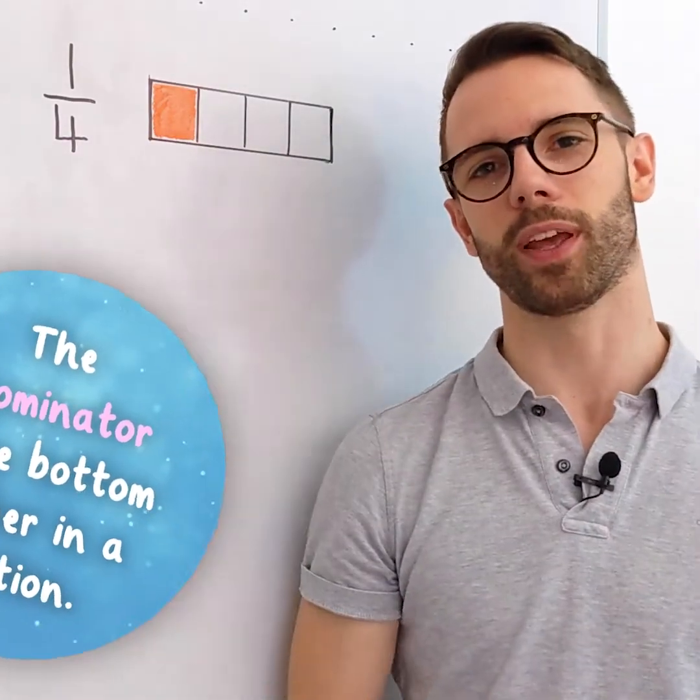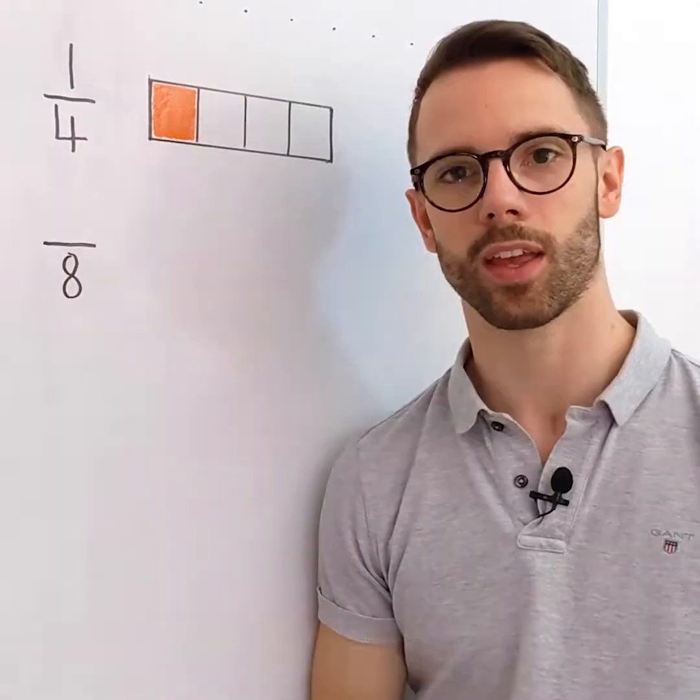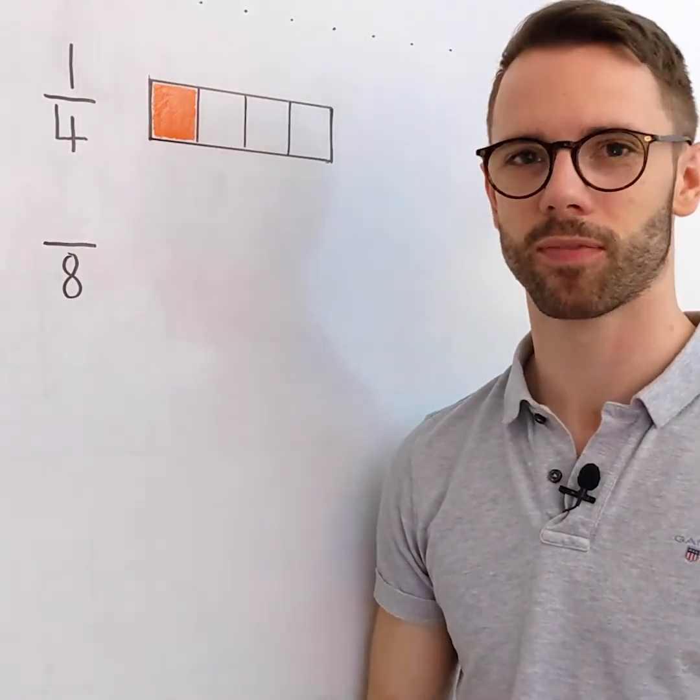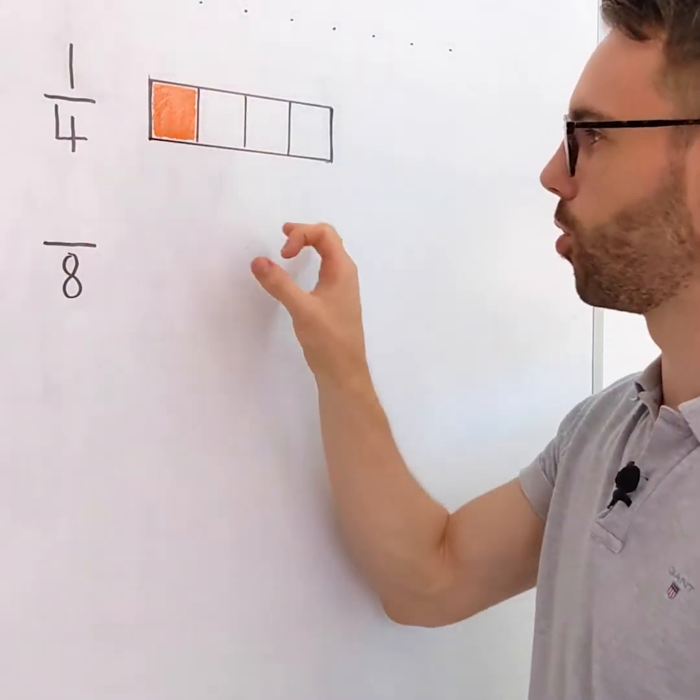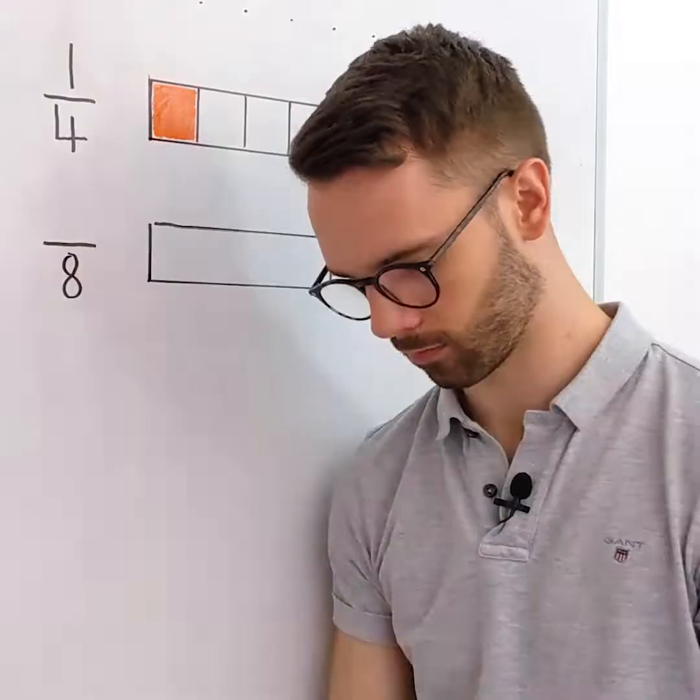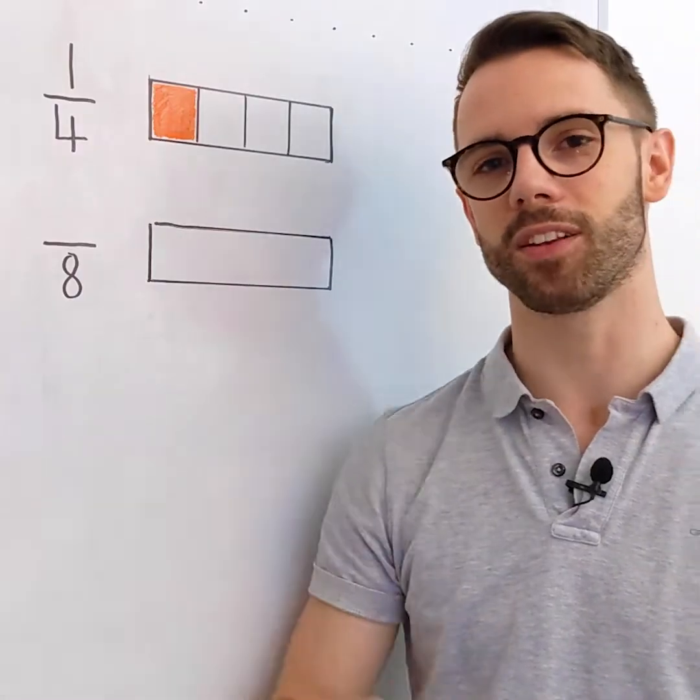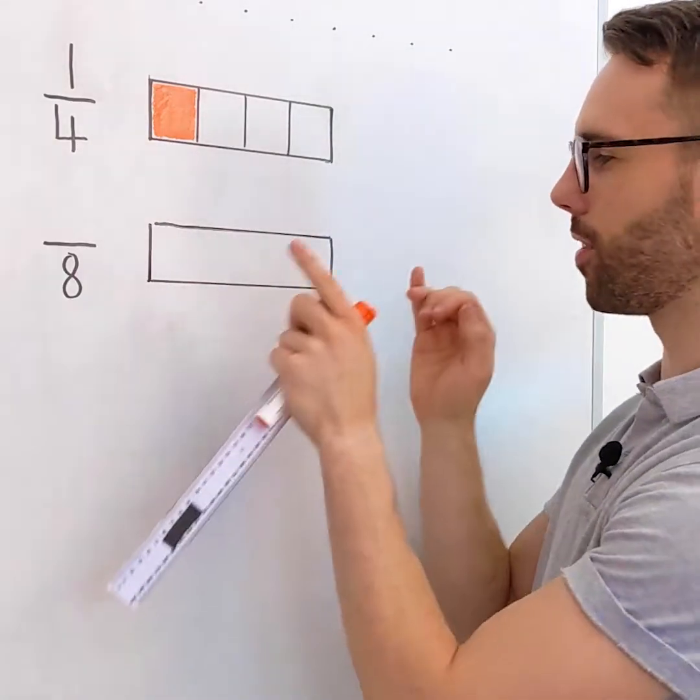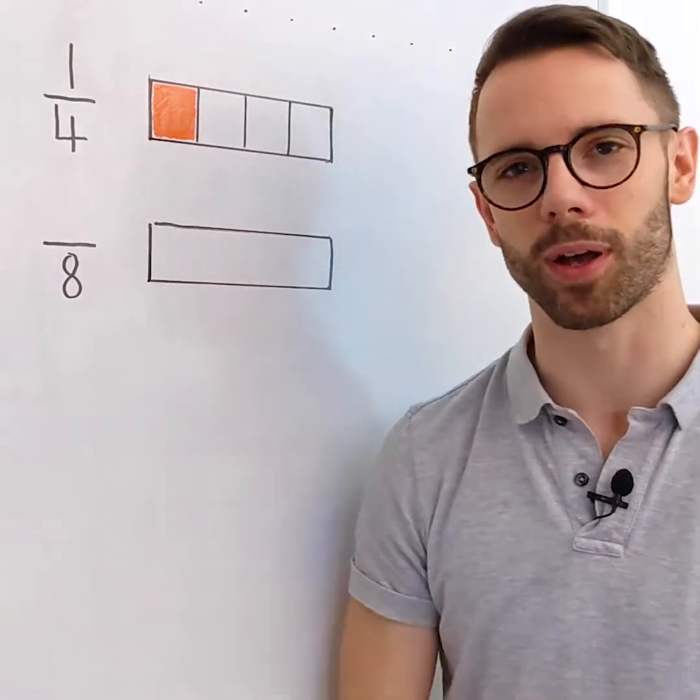How about if our denominator was eight? Can we find the equivalent fraction? Well firstly we're going to draw one whole the same size as we did before. Unlike our quarter, our fraction below has eight parts so I need to equally divide one whole into eight parts.